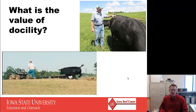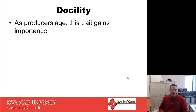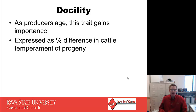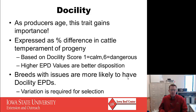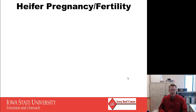What's the value of docility? We have two pictures here at opposite ends of the spectrum — one person is certainly enjoying the cattle business much more than the other. As producers age, this trait seems to gain importance for obvious reasons. It is expressed as a percentage difference in cattle temperament of a bull's progeny, based on a docility score from one (calm) to six (very aggressive or dangerous). Higher EPD values indicate better disposition. Breeds with temperament issues are more likely to have docility EPDs — variation is required for selection, so if a breed is known for calm demeanor, you're unlikely to see a docility EPD in their performance trait profile.